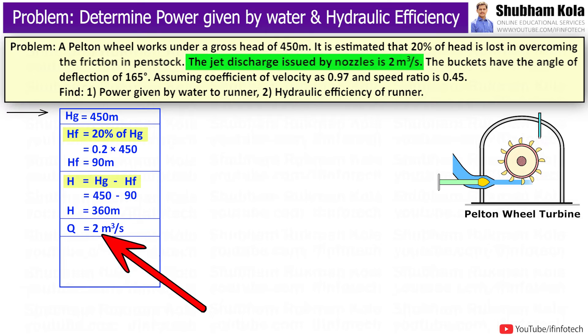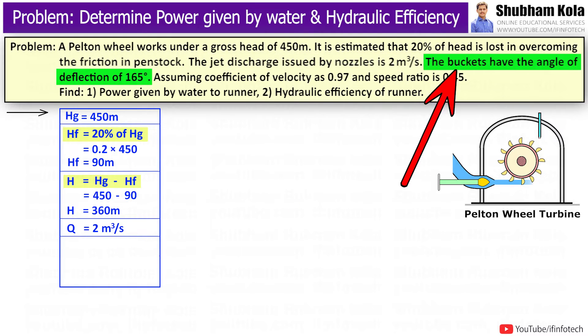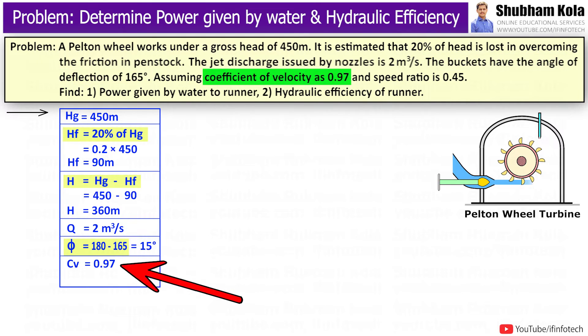Jet discharge Q is 2 m³ per second. The buckets have the angle of deflection of 165 degrees. We have to assume coefficient of velocity as 0.97 and speed ratio will be 0.45.